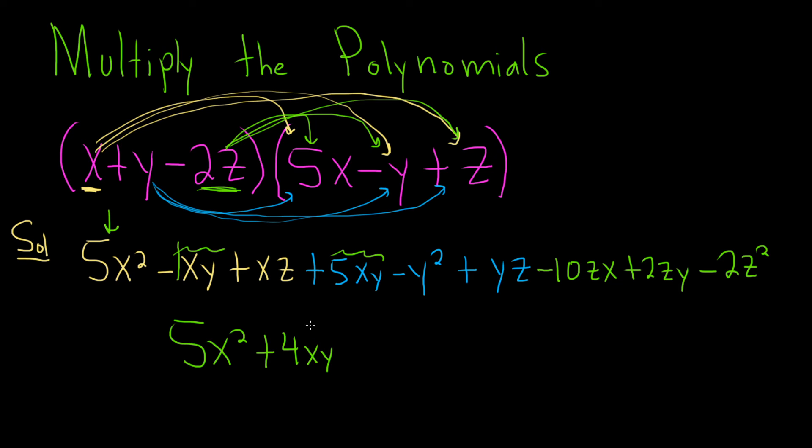And then xz terms, there's one here. And oh, oh, I almost messed up. I almost didn't see it. Look, there's a zx term. That's the same thing as an xz term. So we have 1xz minus 10xz. So that's going to give us minus 9xz.